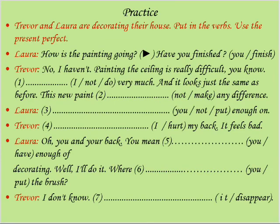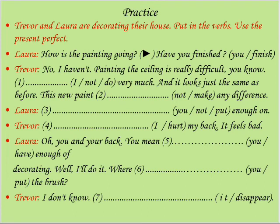So that will be the end of discussion on present perfect tense. Now we are going to have a look at some exercises. Trevor and Laura are decorating their house — put in the verbs, choose the present perfect tense۔ Laura: 'How is painting going? Have you finished?' 'No, I haven't — painting the ceiling is really difficult۔' 'I haven't done very much۔' I کے ساتھ have کا استعمال ہوتا ہے اور negative ہے تو haven't، verb do کی third form done لگے گی: 'I haven't done very much۔'